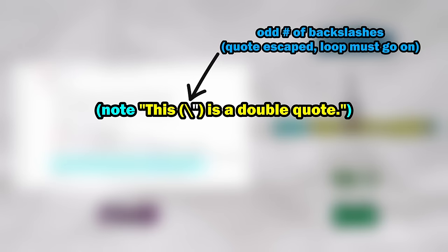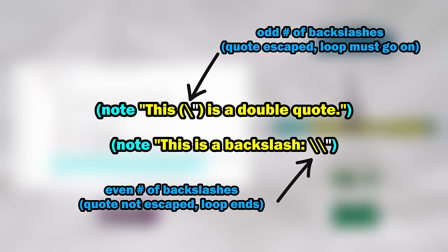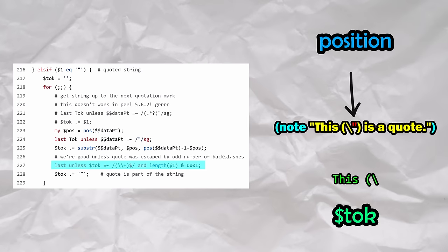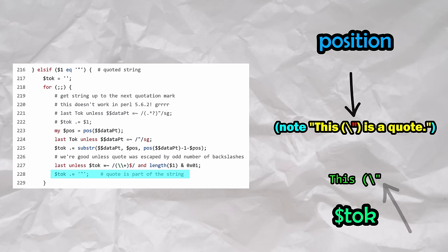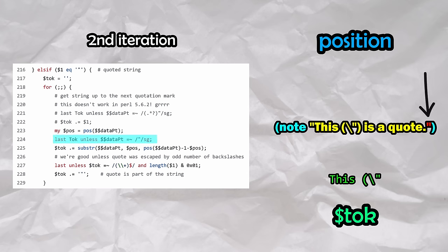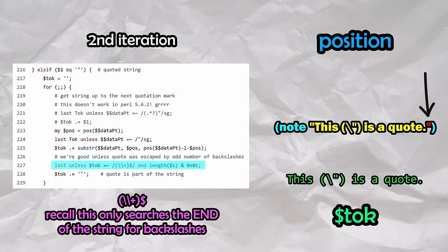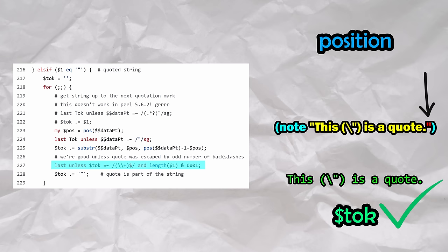If it finds an odd number of backslashes, the quote is deemed to be an escaped quote and the loop must go on. It only cares about odd quantities of backslashes, since an even number, such as two, would represent a backslash escaping a literal backslash character. In this case, it finds one backslash, which is odd, and the loop continues. Since we now know that the quote is a part of the string, it appends the quote back onto the end. On the second iteration, it finds the next quote ahead of it, appends the meat, and does the check again. Now it finds zero backslashes, which is a negative match, deeming this quote to be the true closing quote, and is able to safely exit the loop.